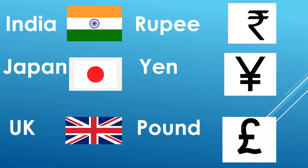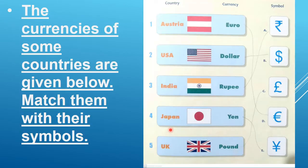So today we have learned about India, Japan, Austria, and USA and their currency symbols. The question is: the currencies of some countries are given below — match them with their symbols.